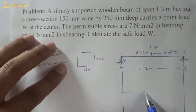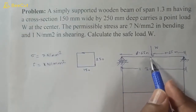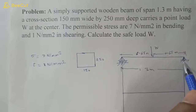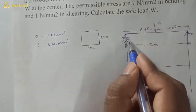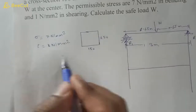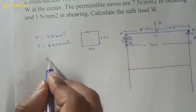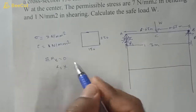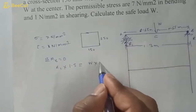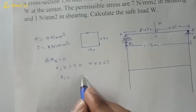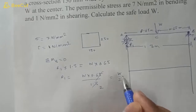The load W acts at mid-span, so by symmetry the reaction forces R1 and R2 are each W/2. To verify: taking moments about B, R1 into 1.3 equals W into 0.65, giving R1 equal to W/2.